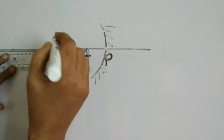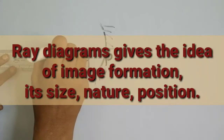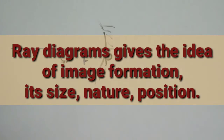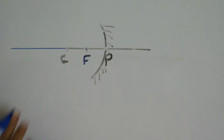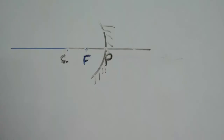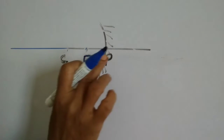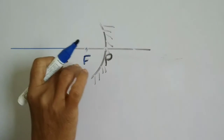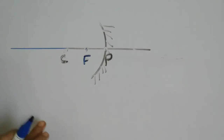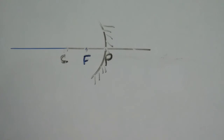Extend the principal axis beyond P. Before you draw, take a scale and mark for a particular length, mark the point C, draw an arc from C, and then your drawing will be almost accurate.